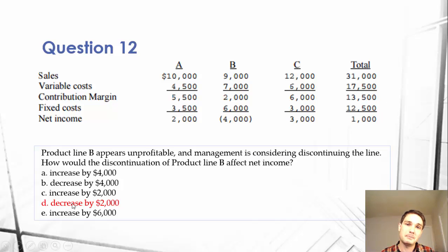So the answer here is D. It will decrease by $2,000 if we cut B because we'll be losing out on that contribution margin. If we're losing out on that contribution margin, that's a bad thing. We shouldn't cut this. But D is the answer. Our total net income would decrease by $2,000 if we cut product line B.